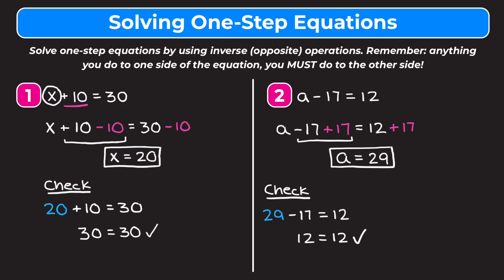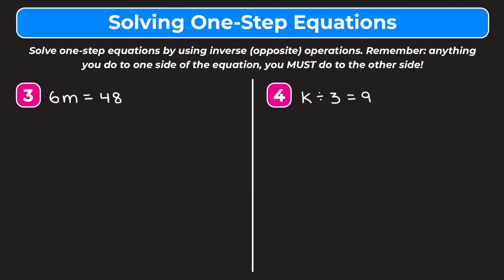Now we look at examples using multiplication and division. Example 3 is 6m equals 48. When a number is next to a variable that means multiplication, so this reads as 6 times m equals 48. We're multiplying m by 6, so to get rid of the 6 we use the inverse operation — the inverse of multiplication is division. We divide the left side by 6, and anything we do to one side we do to the other, so we divide the right side by 6 as well. On the left, 6m over 6 gives us 1m, and on the right 48 divided by 6 gives us 8.